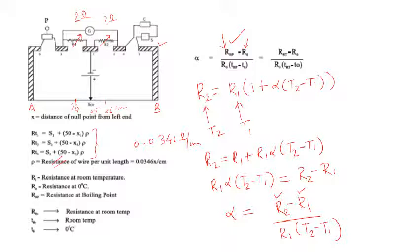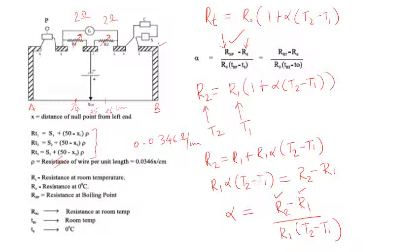This formula was defined for finding the resistance at room temperature as RT. The formula is RT = R0(1 + α(T2 - T1)), where RT is the room temperature resistance and R0 is the resistance at 0°C. We are going to use a similar formula to get the temperature coefficient.